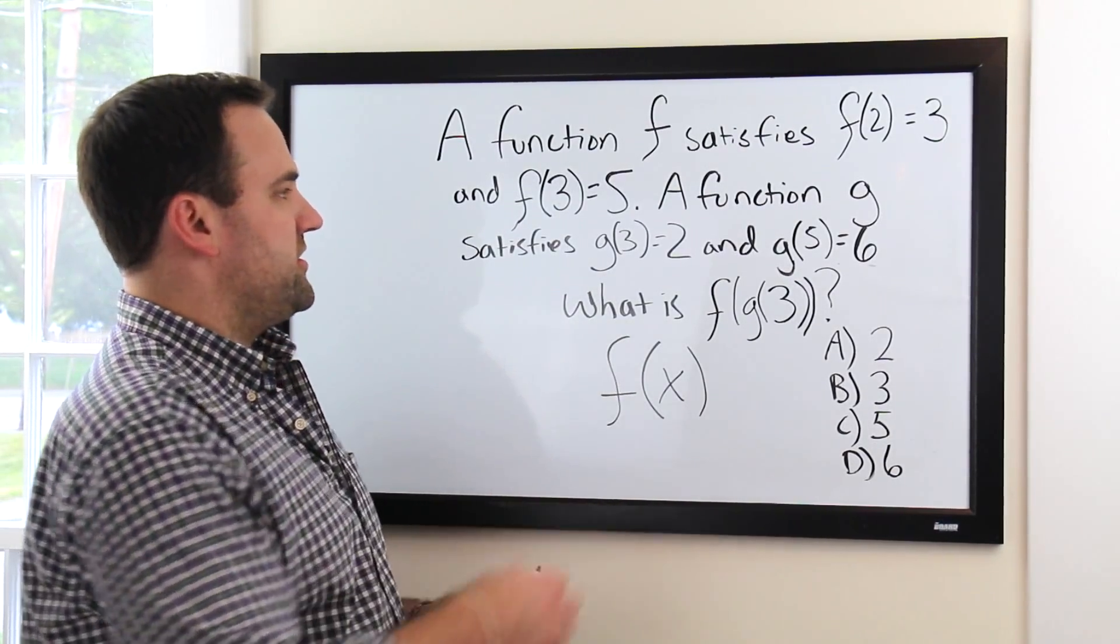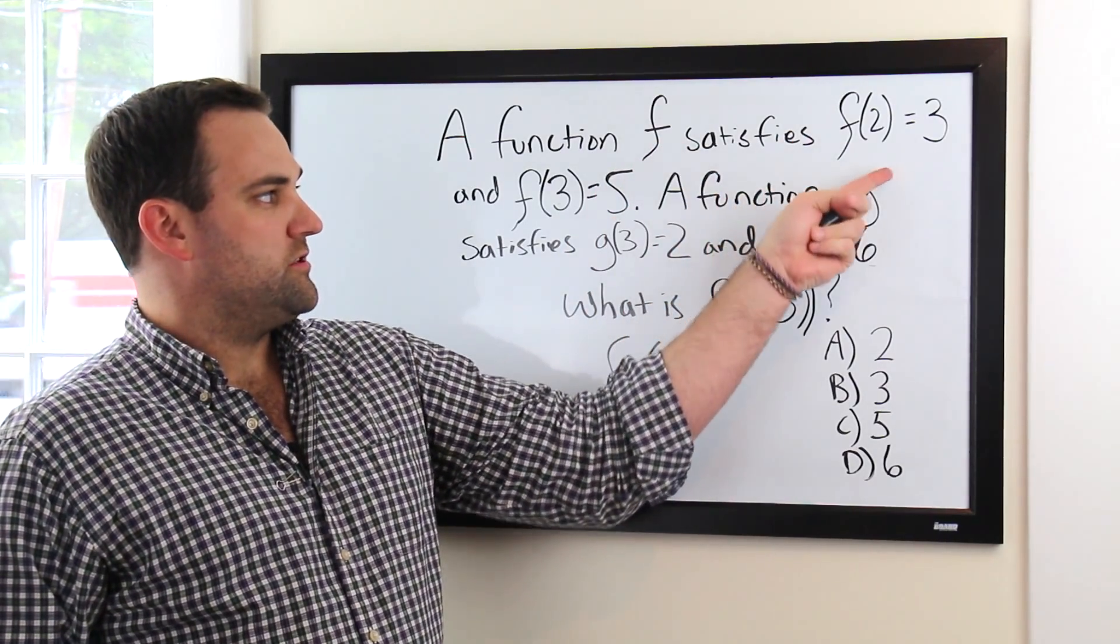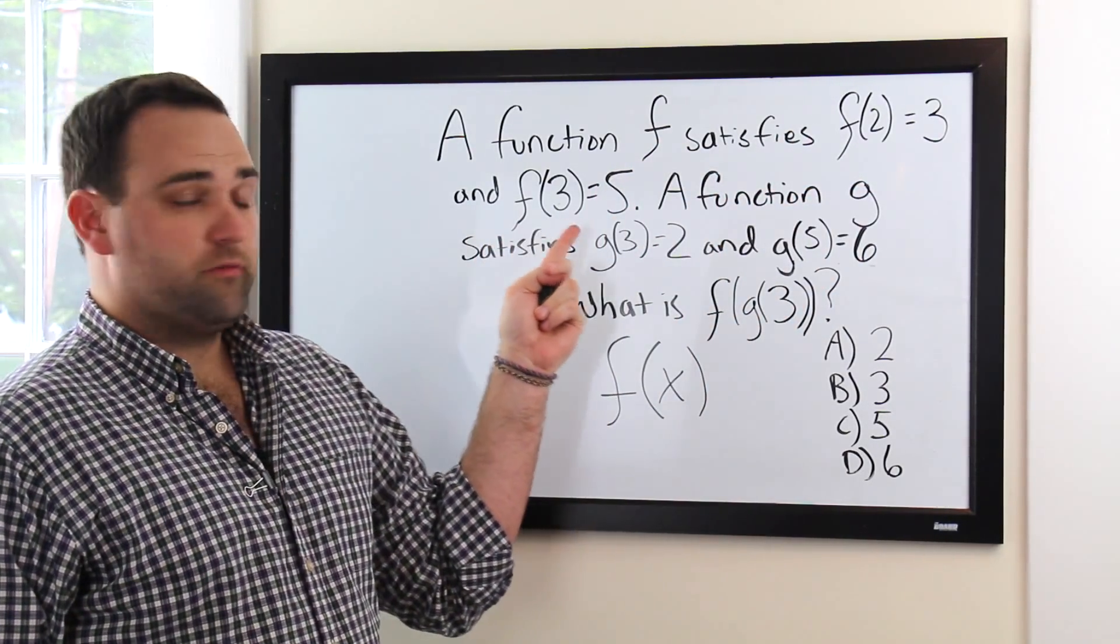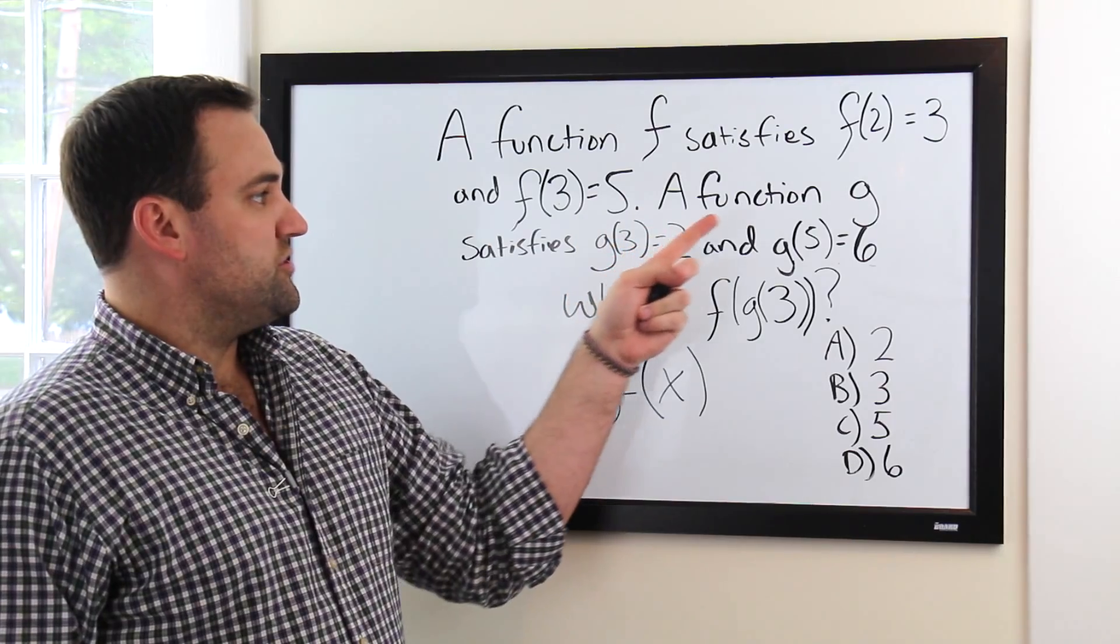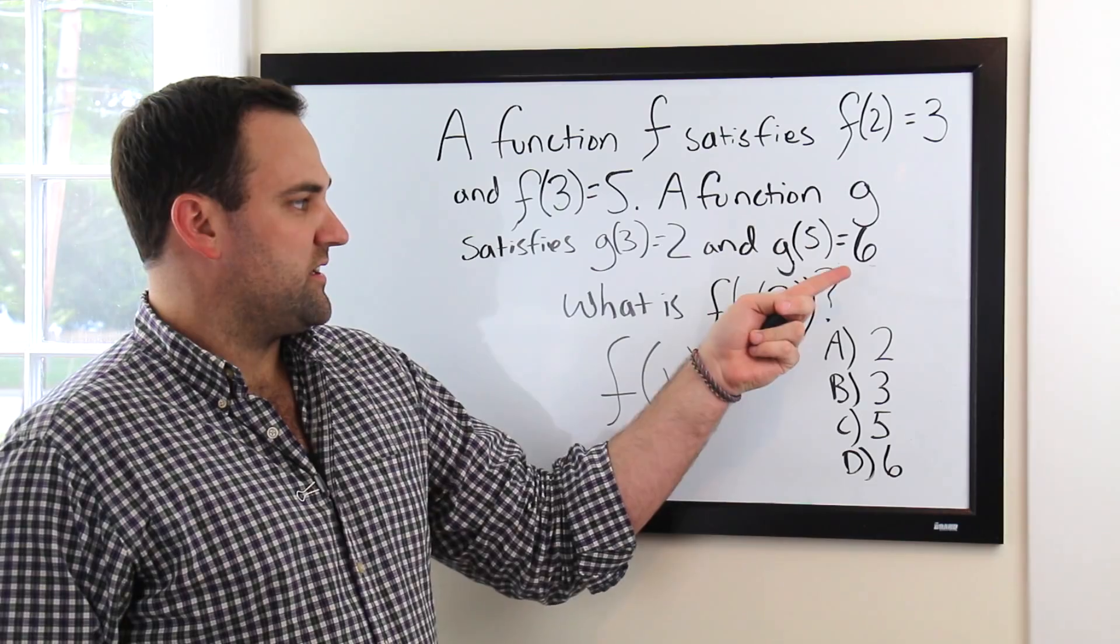So, if we get to our question here, our question says, a function f satisfies f(2)=3 and f(3)=5, and a function g satisfies g(3)=2 and g(5)=6.